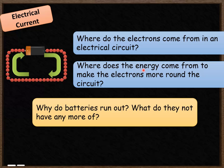Where does the energy come from to make the electrons move around the circuit? The energy comes from the battery. So the battery is a store of energy. It's stored as chemical energy inside batteries. And that energy is released and turns into kinetic energy when it moves the electrons around the circuit. We could also call that electrical energy.